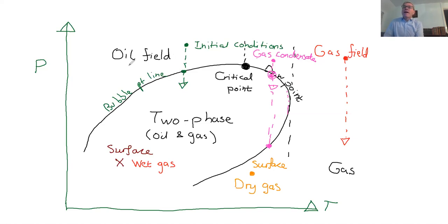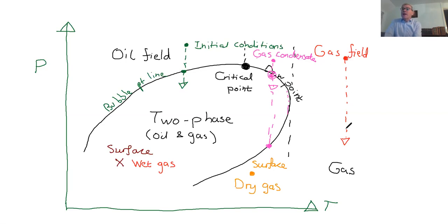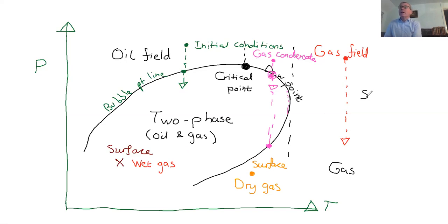So to summarize the field types: an oil field has liquid oil present, and when you drop the pressure you form gas — you have a bubble point. A gas condensate is a gas field where, when you drop the pressure, you hit a dew point and oil forms in the reservoir. A gas field can be either dry gas or wet gas. The last description you might hear for gas or oil is sweet and sour.